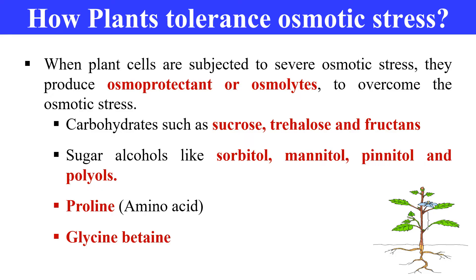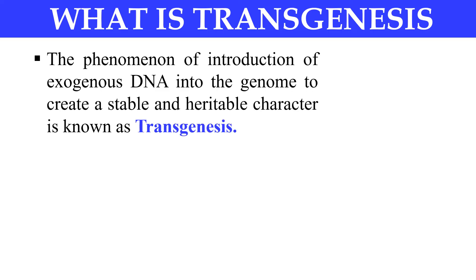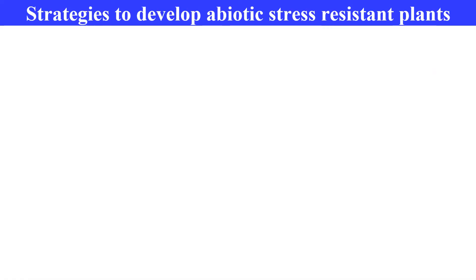Now, as mentioned, we are going for the production of plants which are resistant to abiotic stress, and this production is through transgenesis. Transgenesis is a process of transferring a foreign gene into plants. This foreign gene is known as a transgene, while the plant which carries the foreign gene is known as a transgenic plant.